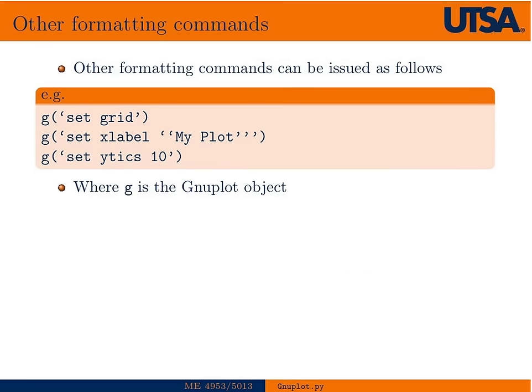Other formatting commands can be issued. Any other commands that you want to use for formatting, like setting up a grid, an X label, X ticks, all of these things that you'd normally have in your Gnuplot script, you can set them up using this command, where G is the Gnuplot object.